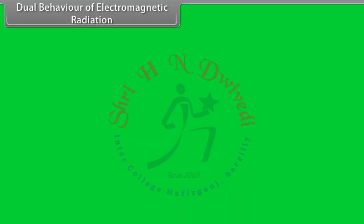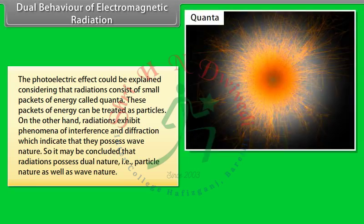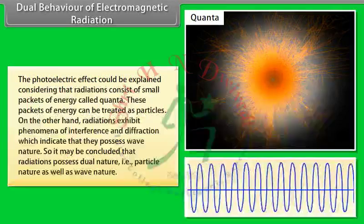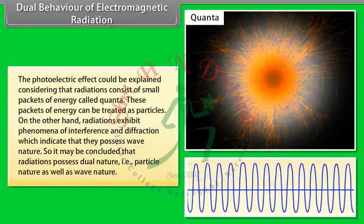Dual behavior of electromagnetic radiation: The photoelectric effect can be explained by considering that radiations consist of small packets of energy called quanta, which can be treated as particles. On the other hand, radiations exhibit phenomena of interference and diffraction, indicating wave nature. It may be concluded that radiations possess dual nature — both particle nature and wave nature.